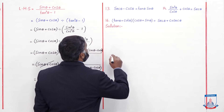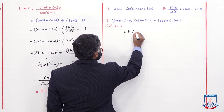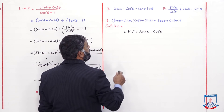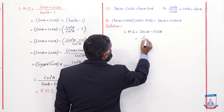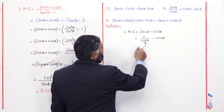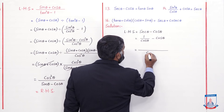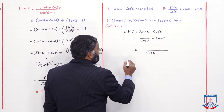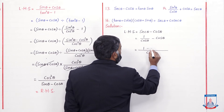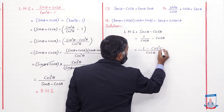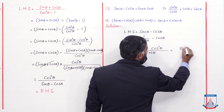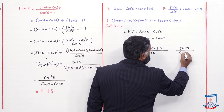Now let's solve question number 13. For question number 13, we take the left hand side: sec θ − cos θ. We can write sec θ as 1/cos θ because it is the reciprocal of cos θ, minus cos θ. Taking LCM: cos θ will be the LCM. Dividing cos θ by cos θ and multiplying by the numerator gives cos²θ. So 1 − cos²θ = sin²θ over cos θ.